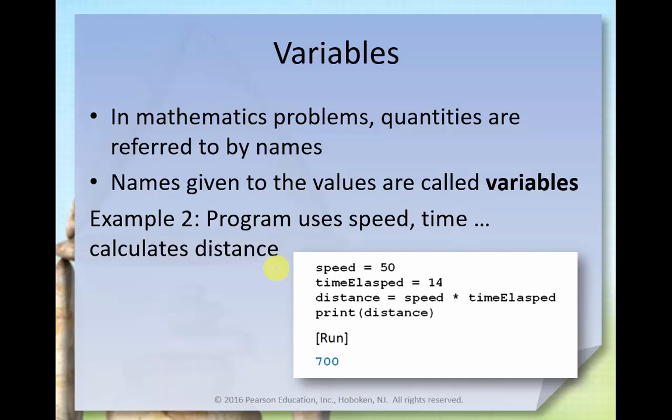In this particular example here, we have a typical mathematical definition of a program that calculates the distance based on speed and time. So when you create these variables, for instance speed, or time elapsed, you want to make sure that you give them names that are representative of what is being held in them. So this time we're going to say speed is equal to 50, the time elapsed is equal to 14, and then a calculation. A third variable is introduced called distance, and we're setting it equal to the value that's held in speed times the value that's held in time elapsed. And then we do an output statement, and we print the result, or the value that's held in distance.